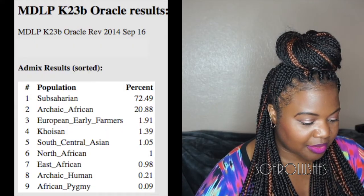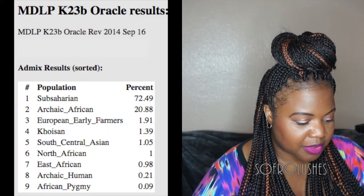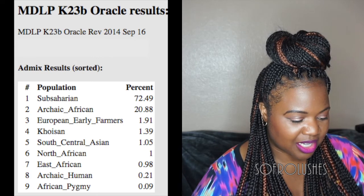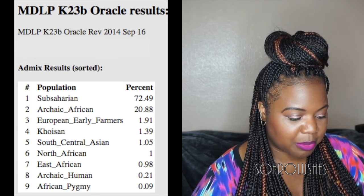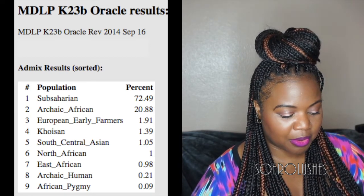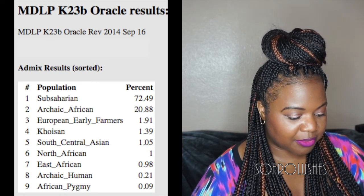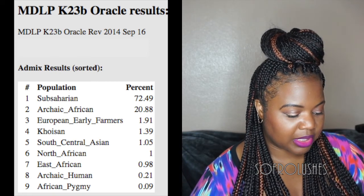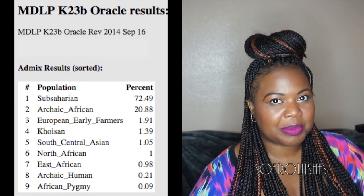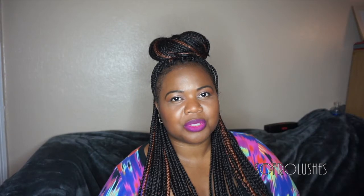I also used the MDLP K23B calculator, and the breakdown is: Sub-Saharan 72.49%, Archaic African 20.88%, European Early Farmers 1.91%, Khoisan 1.39%, South Central Asian 1.05%, North African 1%, East African 0.98%, Archaic Human 0.21%, and African Pygmy 0.09%.